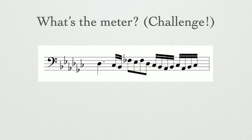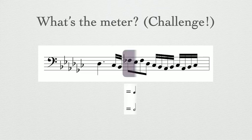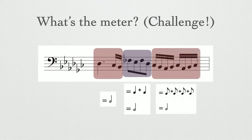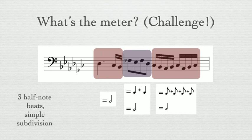Here's your final challenge example. What's the meter? Pause now and take your time. You should have found this beamed group, which equals 1 half note in duration. Searching the rest of the measure for groups, we find that 2 more half note duration groups appear on the sides. With 3 half note beats in simple subdivision, you should have gotten 3/2 meter.